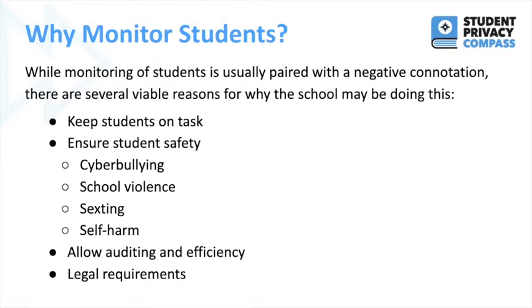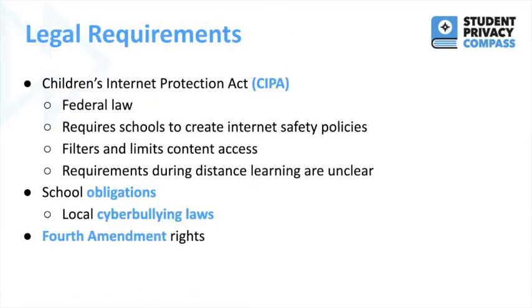An example of auditing and efficiency is in dealing with school buses — schools want to monitor what students get on and off the buses to make sure they all got home okay. And lastly, there are legal requirements that schools must uphold. The Children's Internet Protection Act is a federal law that requires schools to create internet safety policies. These policies include measures for monitoring, blocking, and filtering school computers from accessing content deemed harmful to minors.